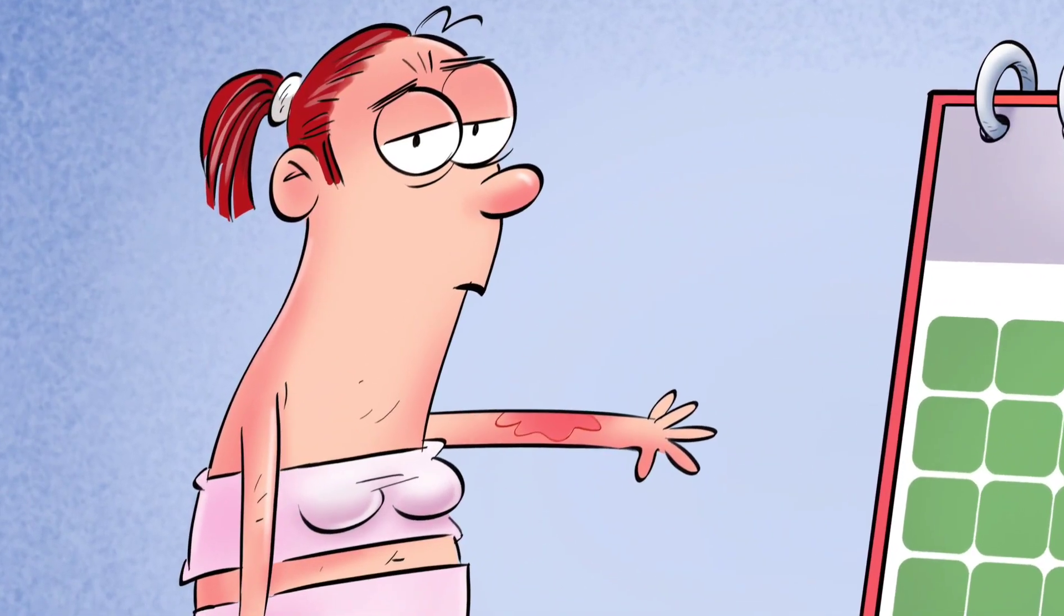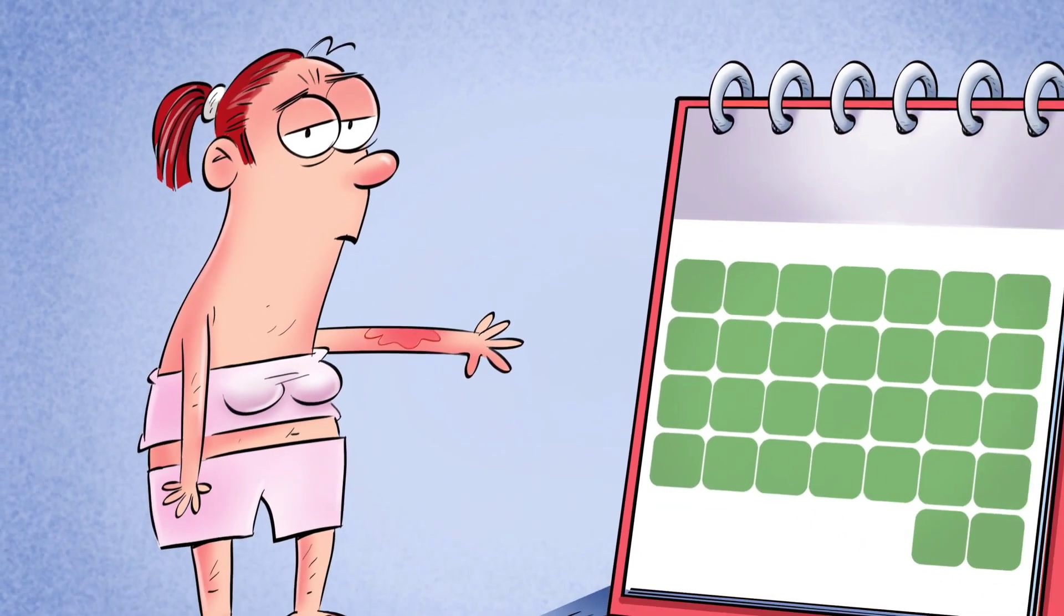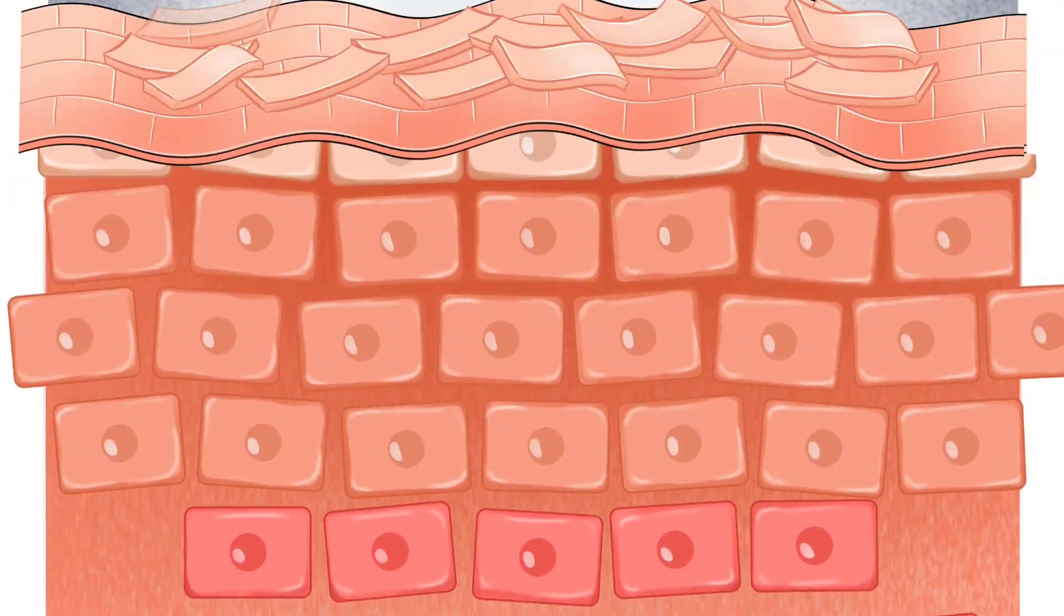In people with psoriasis, however, this process only takes around 3 to 7 days. As a result, immature cells quickly accumulate on the surface of the skin,